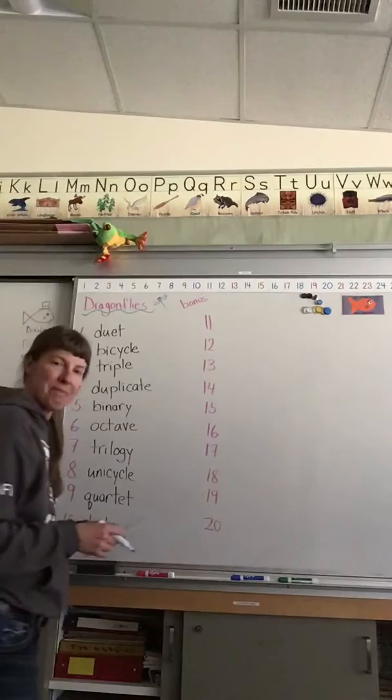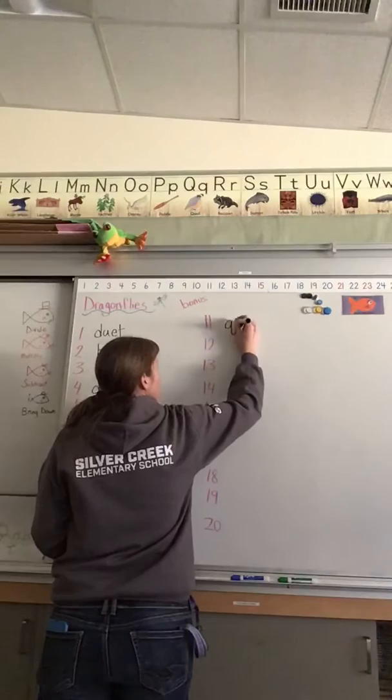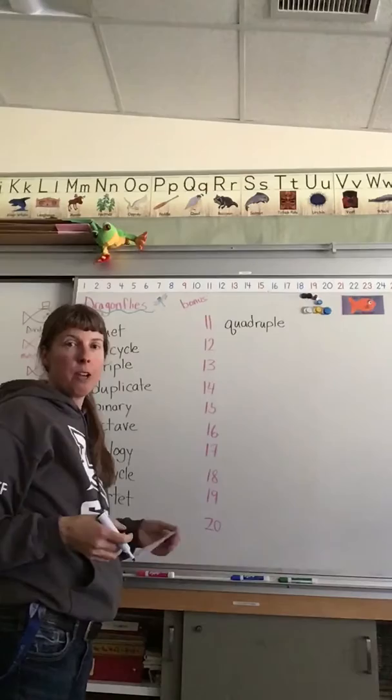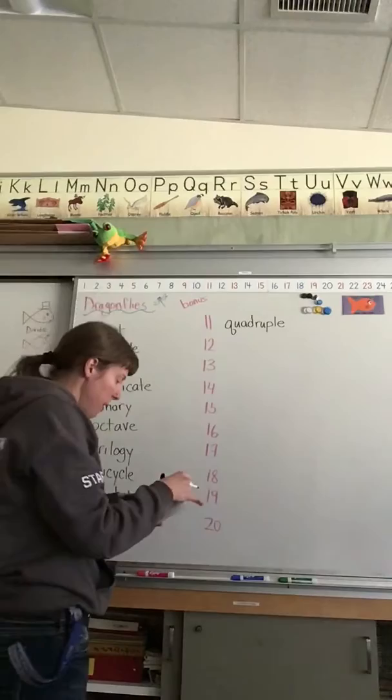Number eleven, quadruple. I would like to quadruple my money, which means it's going to be four times as much as what it is right now. I wouldn't mind if I could make it more than that, but I'd settle for quadruple. That would be all right.